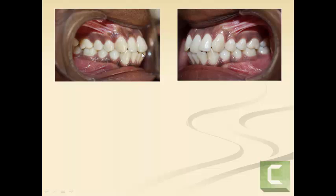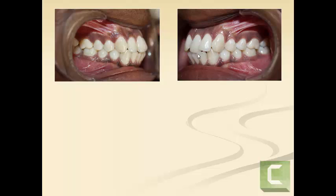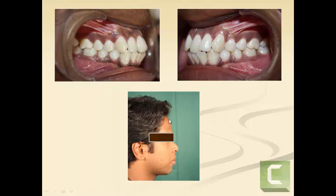The overjet is normal and the overbite is less than 2 mm, giving the impression that the occlusion is fairly normal. However, when we look at the facial profile, we see a huge amount of facial convexity. This type of case is called class 1 bimaxillary protrusion, where the dentition is forwardly placed in relationship to the facial profile.